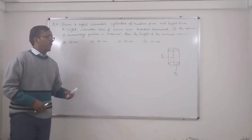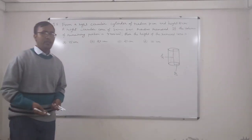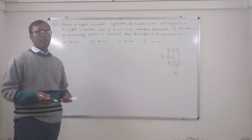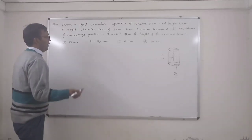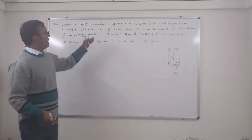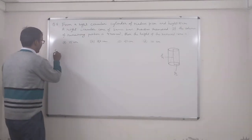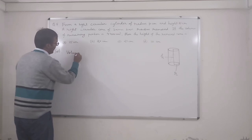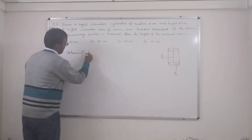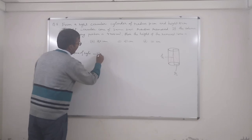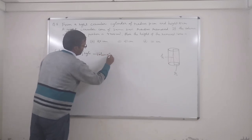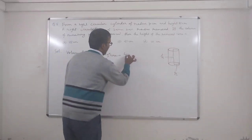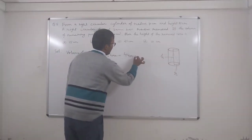Whenever we discuss taking out from solids, in general we compare the volumes. We find out the volumes first. The remaining portion means: volume of cylinder minus volume of cone equals the remaining portion, which is 4400 cm³.